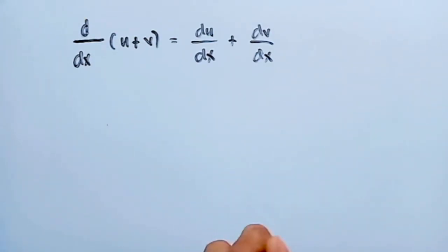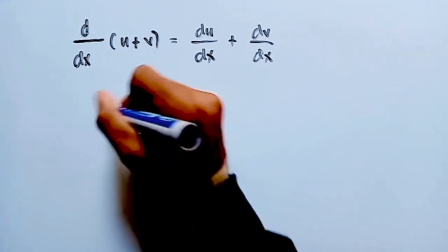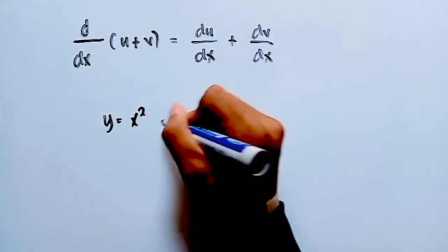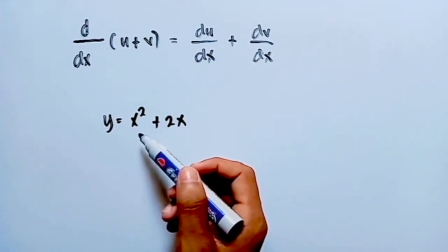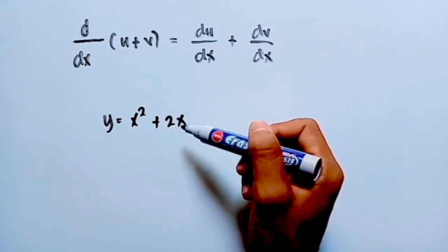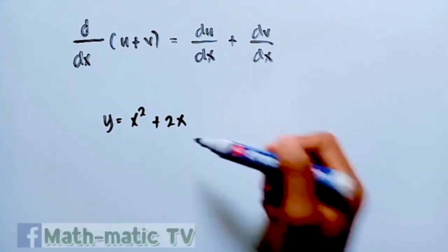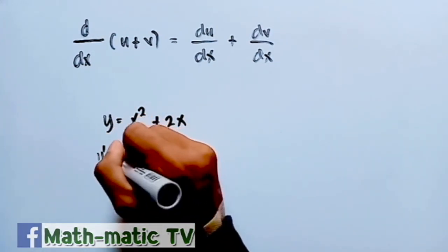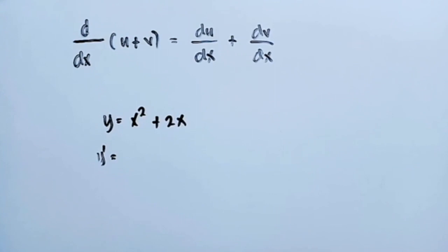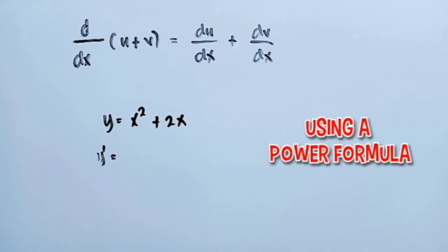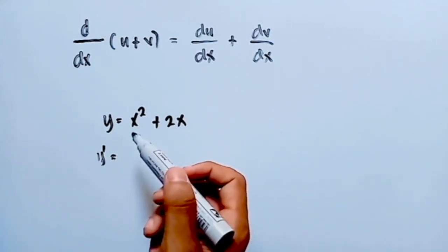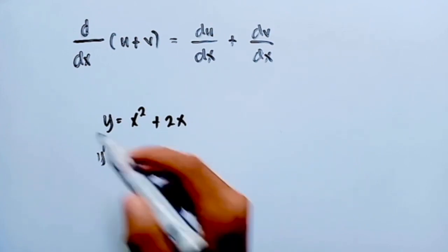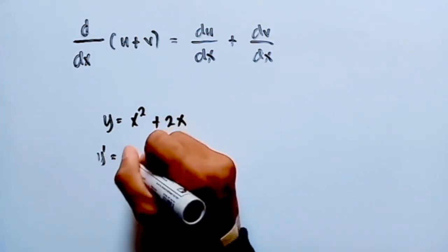So what if we're going to get the derivative of the function y equal to x squared plus 2x? Following this formula, let's get the derivative of x squared with respect to x, then add the derivative of 2x with respect to x. So y prime is equal to — the derivative of x squared, which is very easy to differentiate using the power formula — the derivative of x squared is 2x.